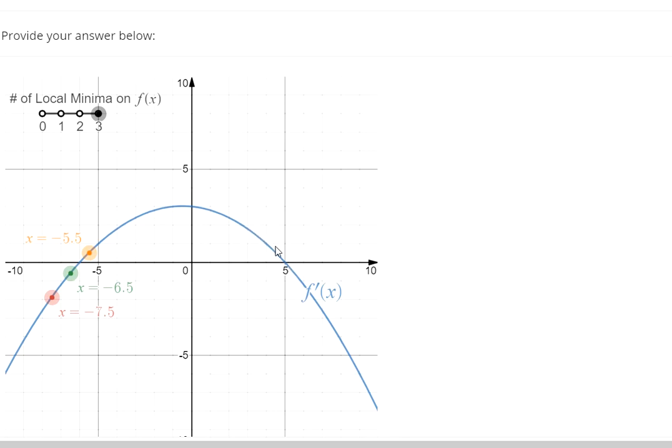It was increasing. The function has a positive derivative, so that means it's going up. It's still going up but at a slower rate. Now it's neither going up nor going down because the derivative is zero. And now the function graph is going down because it has a negative slope.